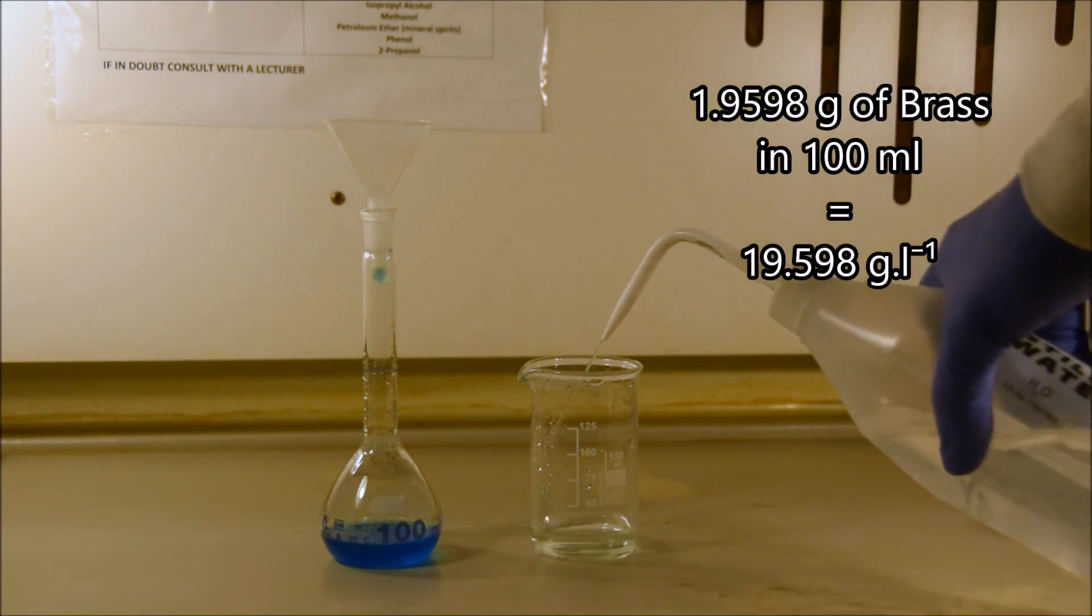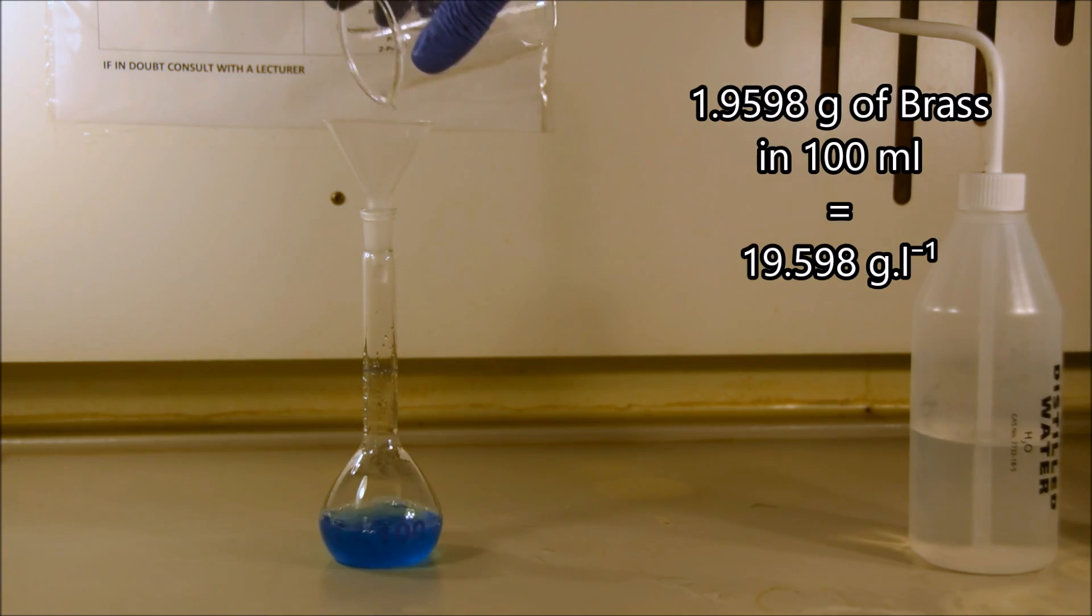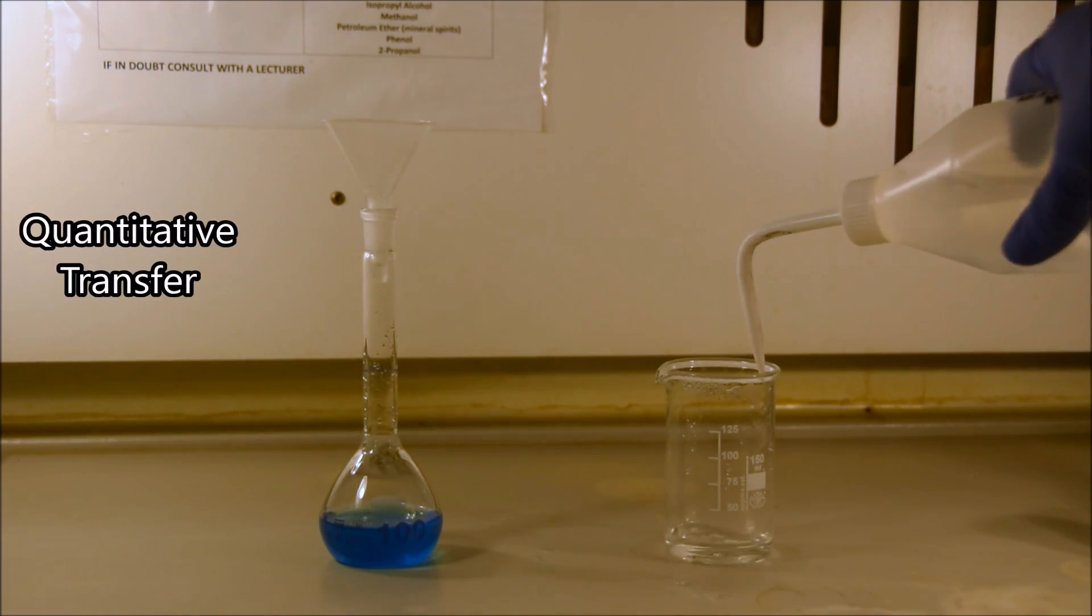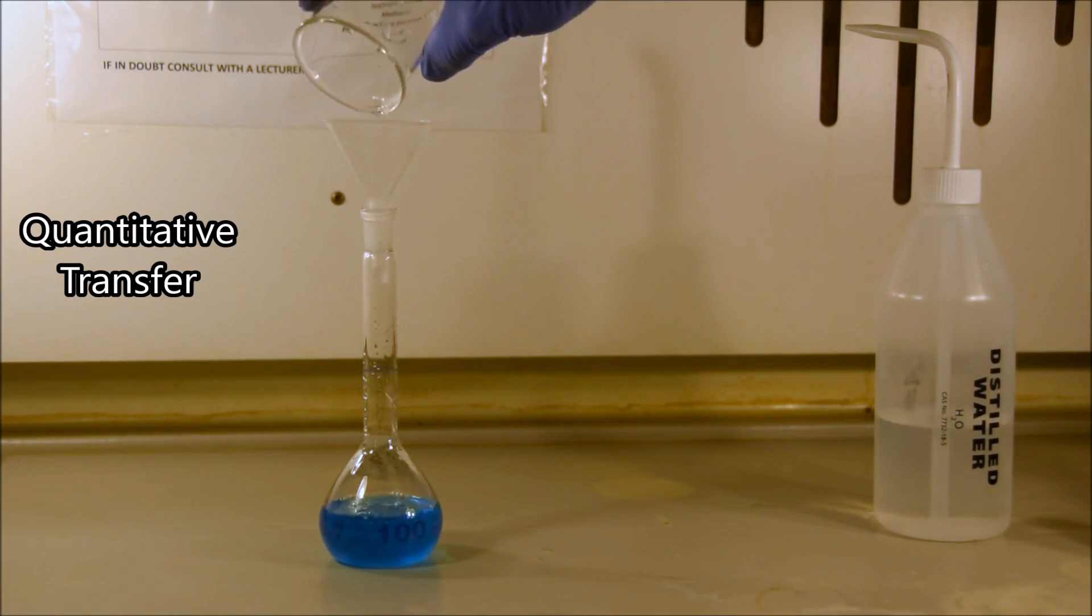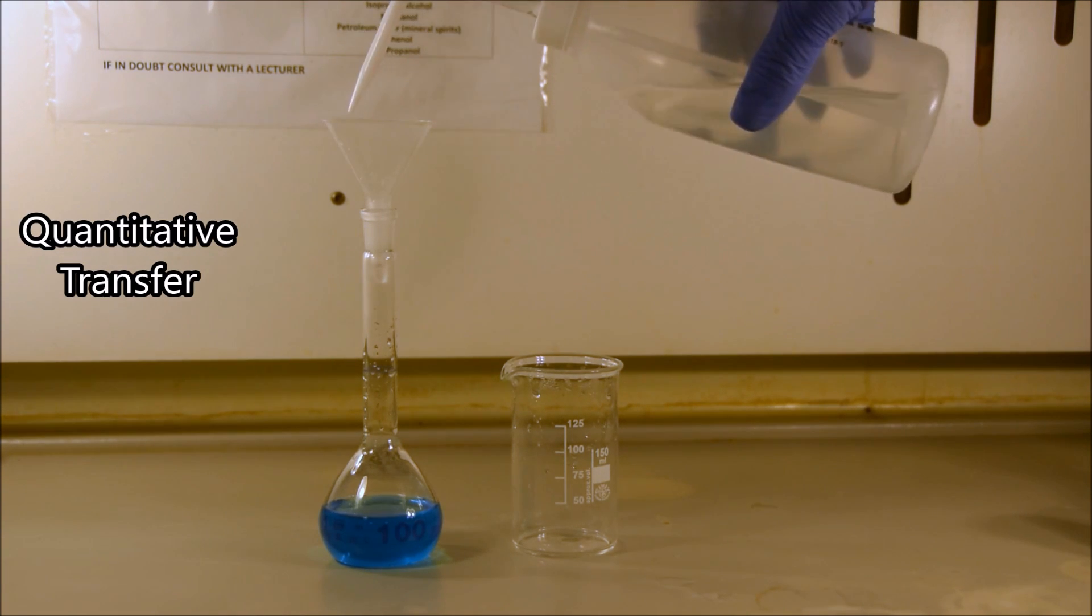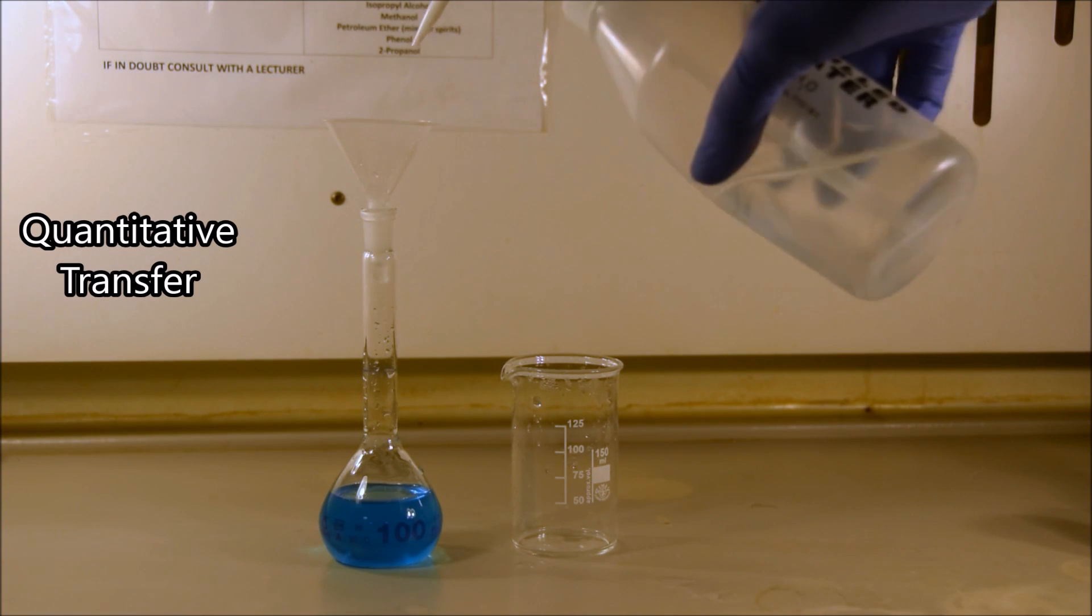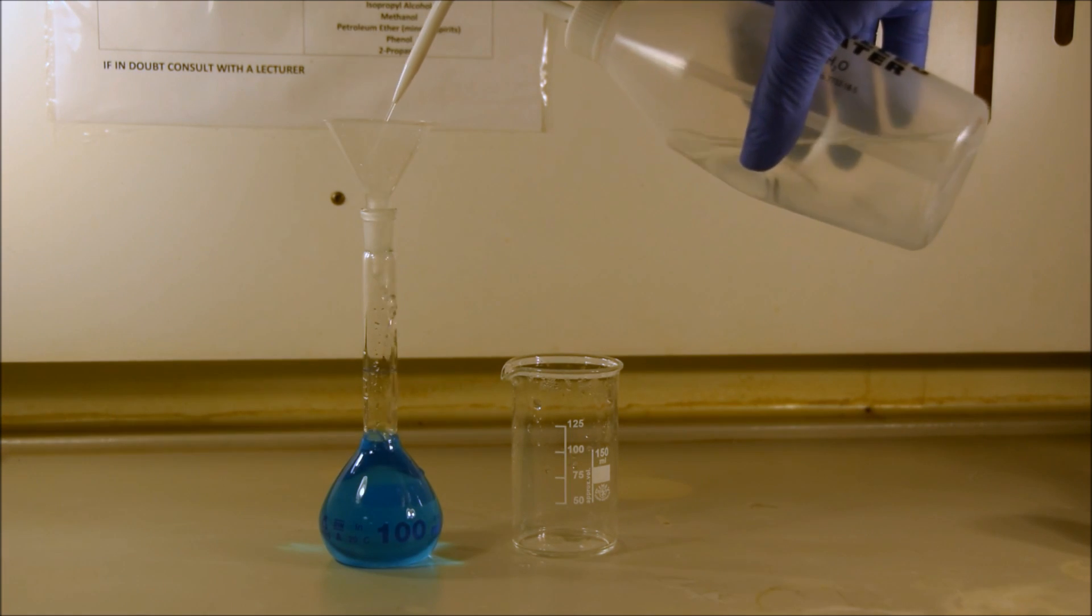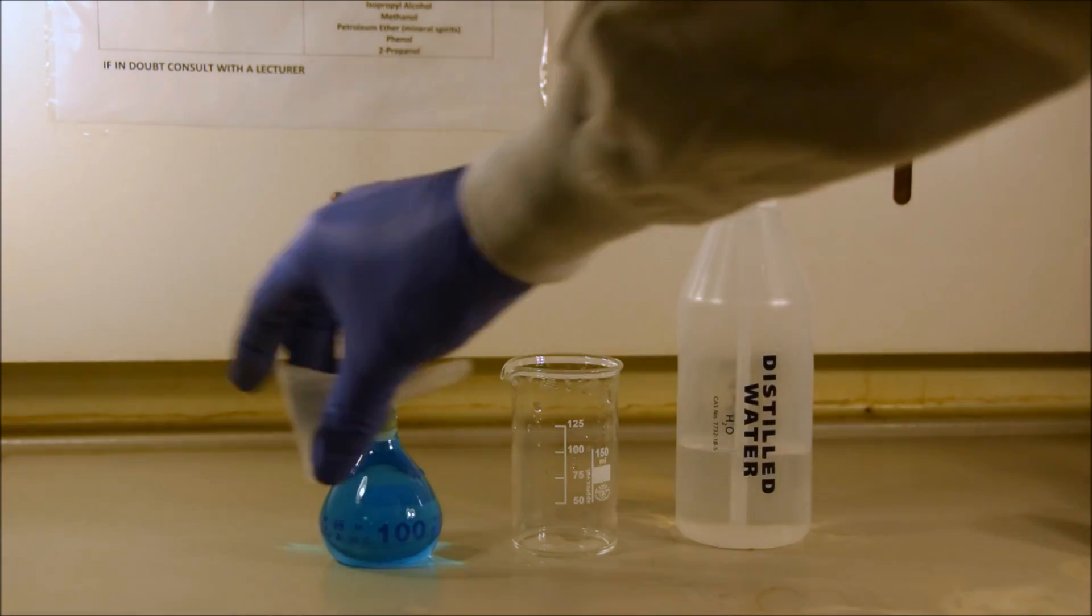For now we're going to look at quantitative transfer. So if we want to do this experiment accurately, it's very important that every little bit of copper, or every little bit of dissolved brass, makes it from the beaker into the volumetric flask. So you can see what I'm doing here, I'm carefully washing down the sides of the beaker, and when I finish washing down the sides of the beaker, I'm going to transfer that into the funnel. Once I've washed down the beaker, and I'm satisfied that there's absolutely no copper inside the beaker, I'm going to wash down the funnel, finish washing down the funnel, and then I can be satisfied that all of the copper has made it out of the beaker, there's none left on the funnel, and it's all inside the volumetric flask.